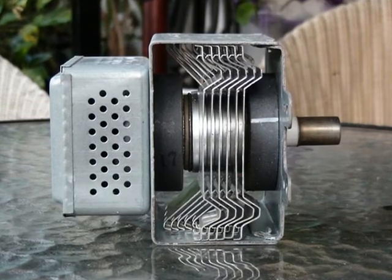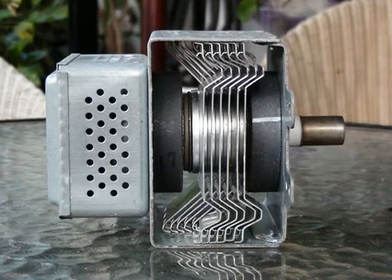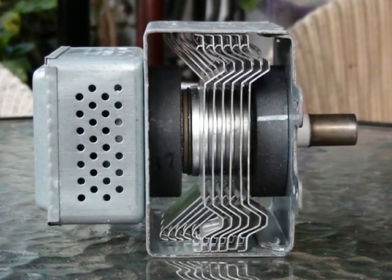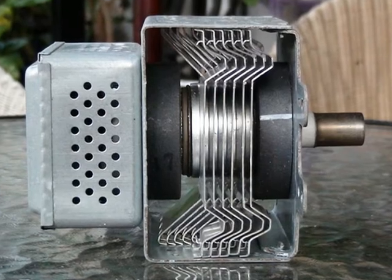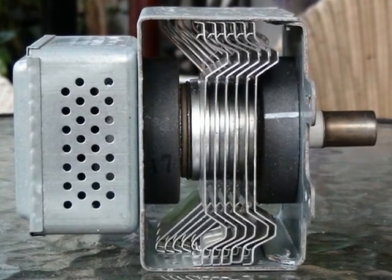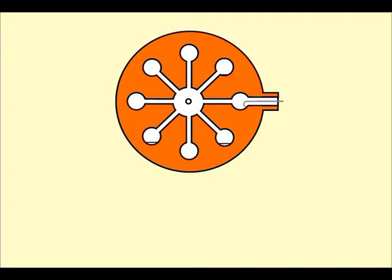This is what an actual magnetron looks like. It is usually a copper tube, specially designed to generate oscillations in the order of 1000 million cycles per second. Inside,